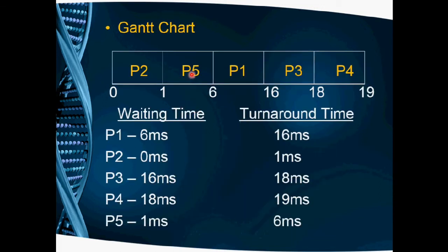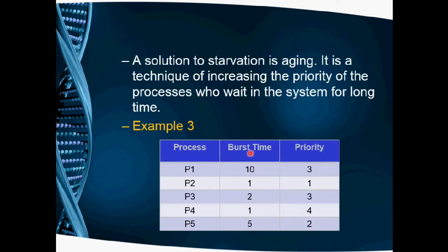P5 is the second highest priority process. Since 1 plus 5 equals 6, P5 executes from 1 millisecond up to 6 milliseconds. Next, we find the next highest priority process to execute after P5.